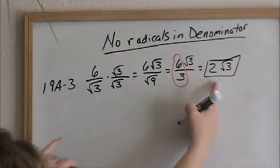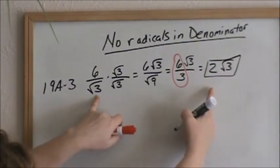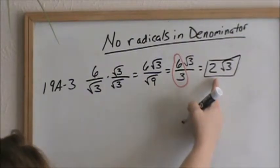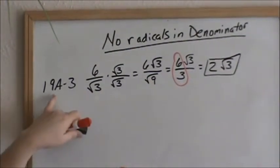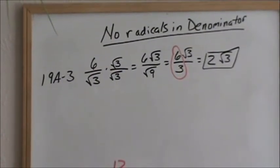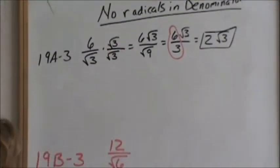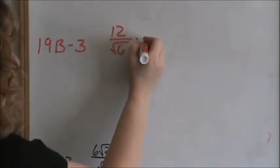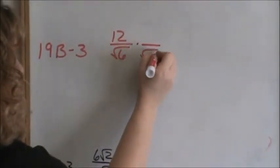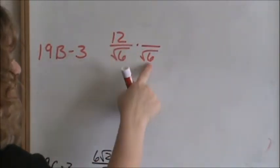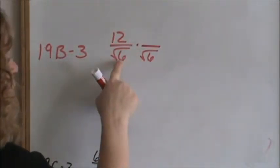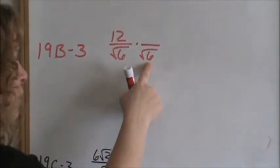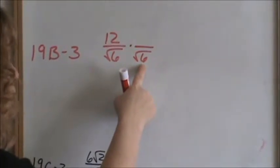If you want to prove that in your calculator, you can put 6 divided by square root of 3, then you can do 2 times square root of 3, and they should come up with the same decimal number. That was 19A3. Now let's jump down to 19B3. Again, you cannot have radicals in the denominator. To get rid of the radical in the denominator, you multiply it by itself — square root of 6 times square root of 6 — because this becomes square root of 36, and 36 is a perfect square which gives you a whole number.